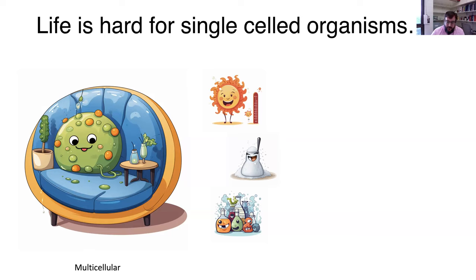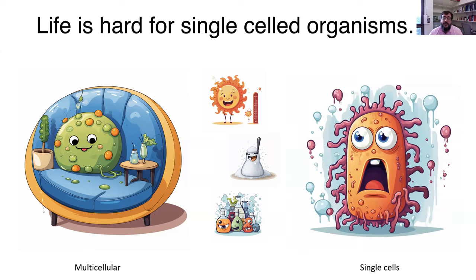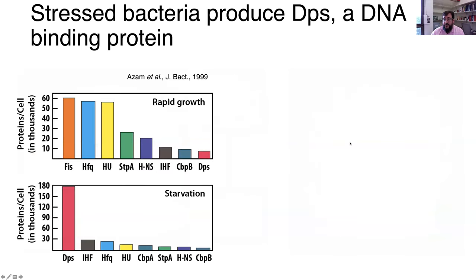But when the environment changes for a single celled organism, things are much more harsh. They have to deal with all these problems directly. And so, you know, they have to experience all of these stresses and find a way to deal with them without dying, which can be very difficult. And in the case of E. coli and many other bacteria, they have a secret weapon that helps them deal with these different stresses. And that's a protein called DPS. So that's a DNA binding protein that was identified in starved cells that was identified just a little over 30 years ago now.